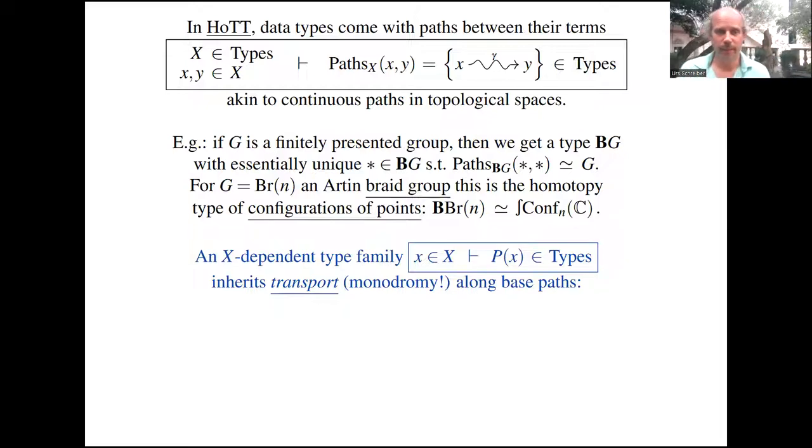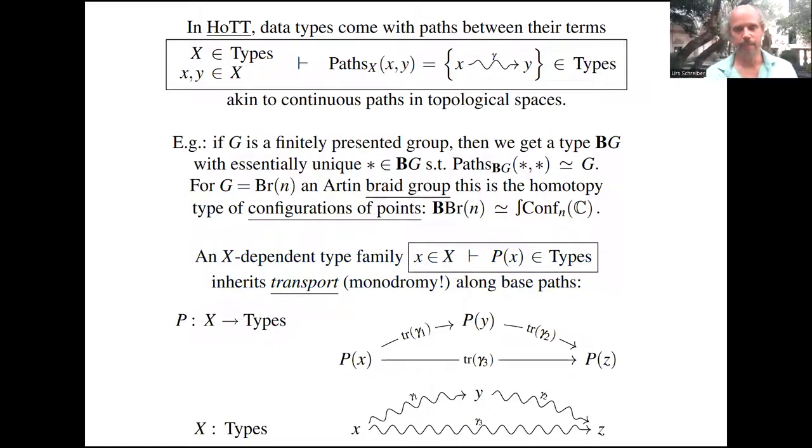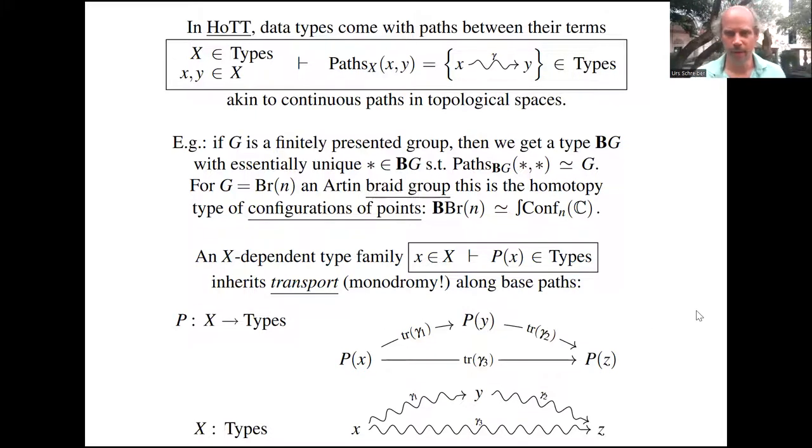The point is that in a dependent type theory we can prove that given an x-dependent type family, it inherits transport operations. If you pick any path in the base type, it computationally lifts to a program that sends terms of type P(x), where x is the input term, to terms of type P(y), where y is the output term. Moreover, you can coherently lift paths upstairs over the source term in a suitable sense covering these paths downstairs.